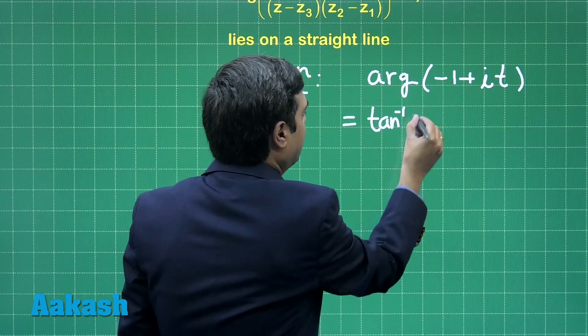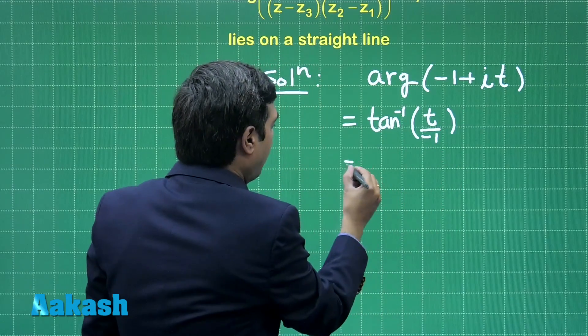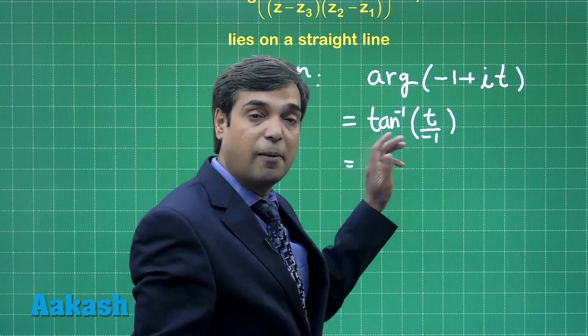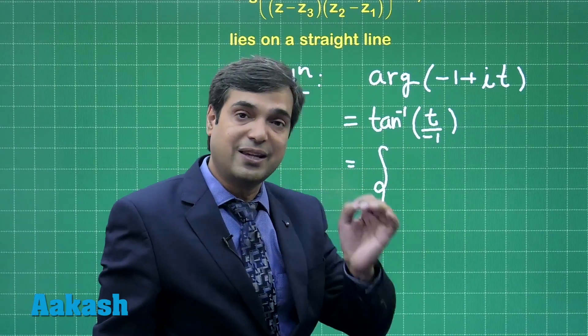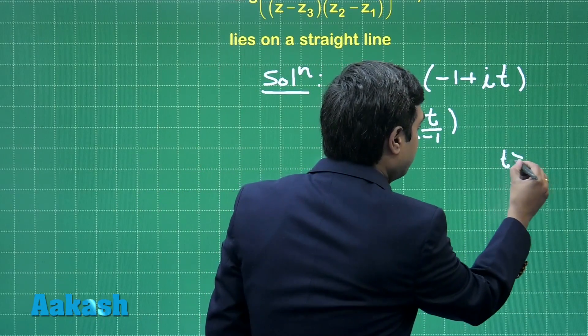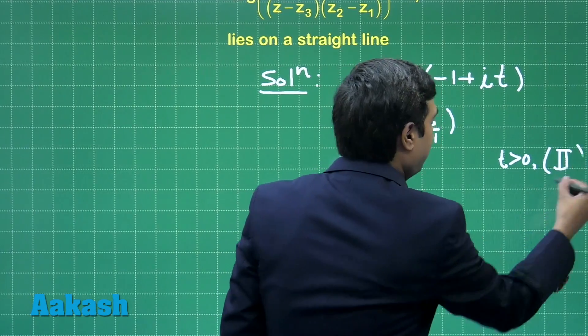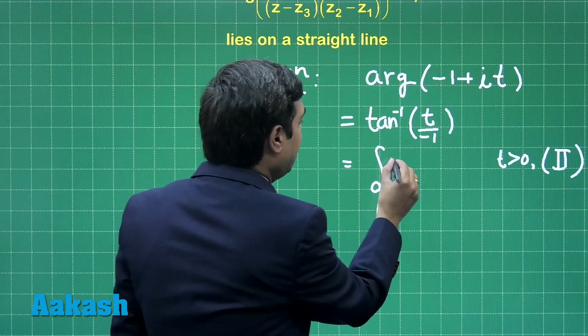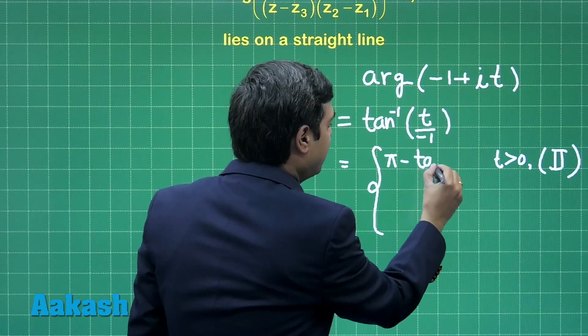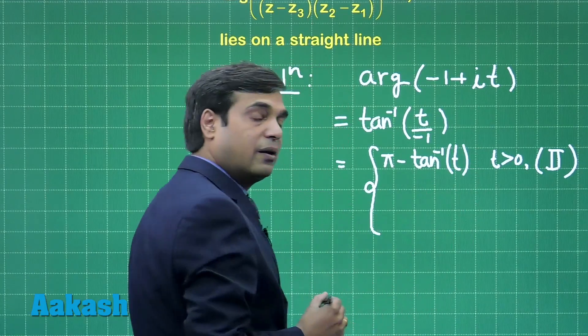Let's write here the number we have to find: argument of minus 1 plus iota t, that is tan inverse t upon minus 1. Now, if t is a positive number what happens? We find positive upon negative, that is in the second quadrant. When t is positive, this lies in the second quadrant. When it is lying in the second quadrant, clearly it will become pi minus tan inverse t.